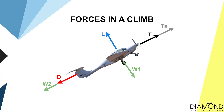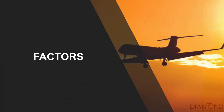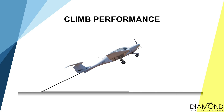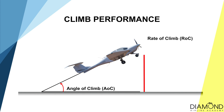During a climb, there will be different variables that affect climb performance. In order to judge how well we are climbing, we have to quantify the climbing performance, and there are two main indications: the angle of climb and the rate of climb. The angle of climb is the angle between the flight path and the ground, measured in degrees. The rate of climb is the vertical speed that the aircraft is climbing, measured in feet per minute.